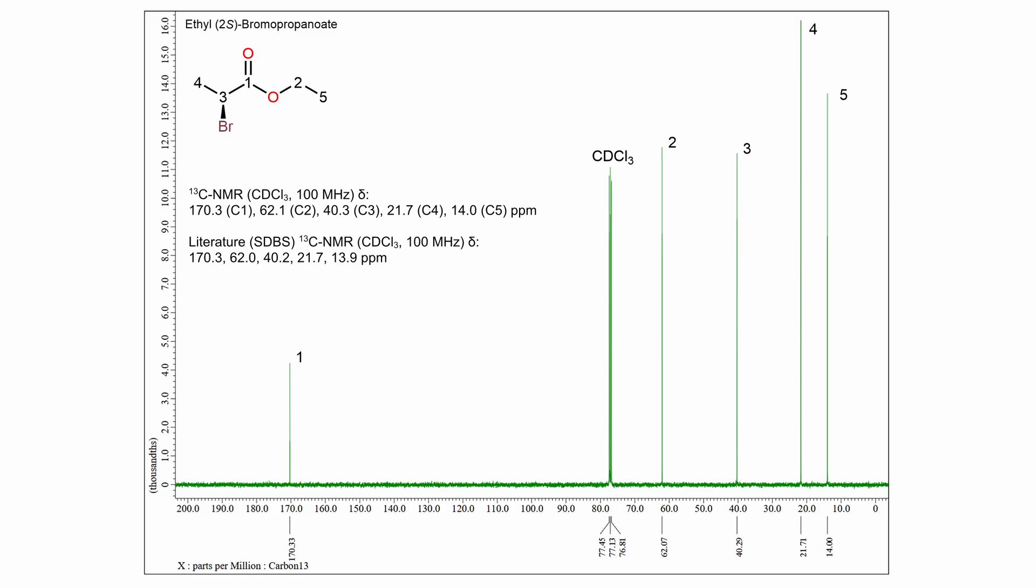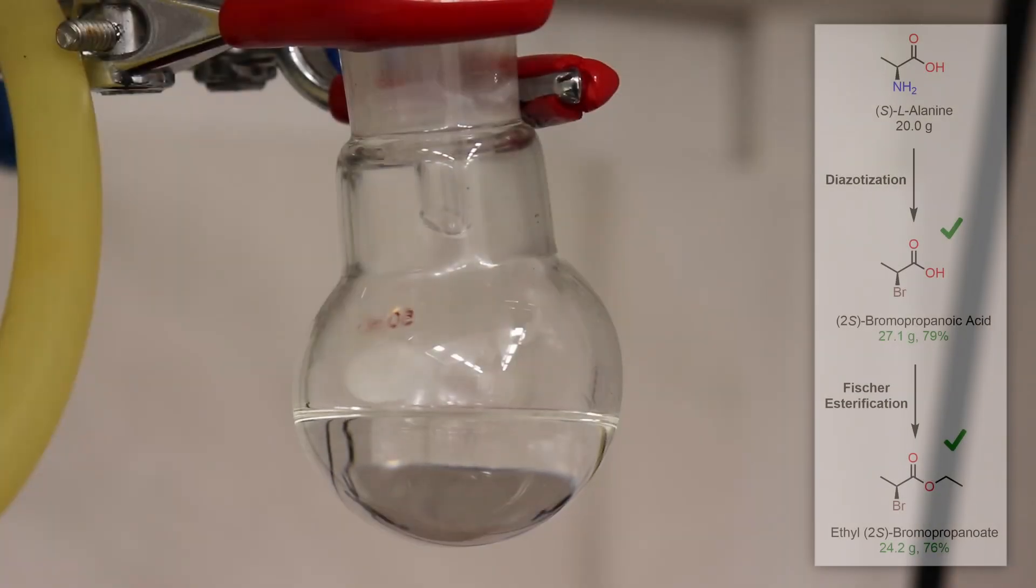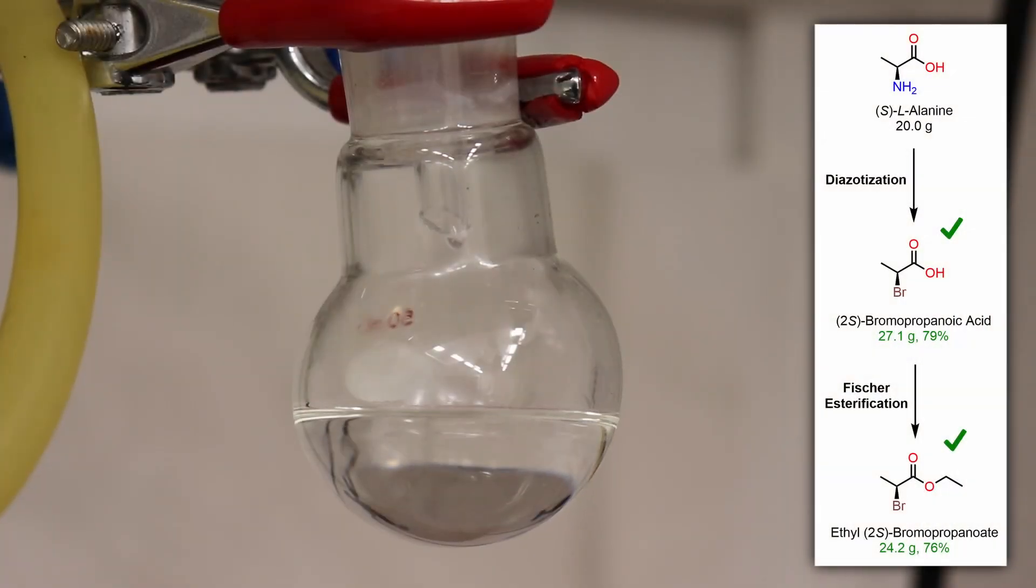I also ran a carbon-13 NMR, with the chemical shifts of each peak again aligning with the expected literature values. Now with all of this data in hand, I am entirely confident in saying that I have successfully prepared a high-purity sample of ethyl-2-S-bromopropionate, starting from L-alanine.